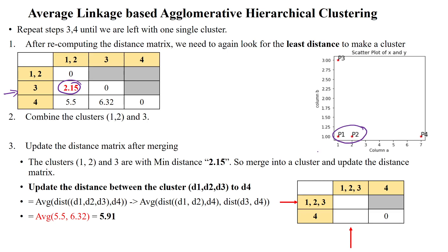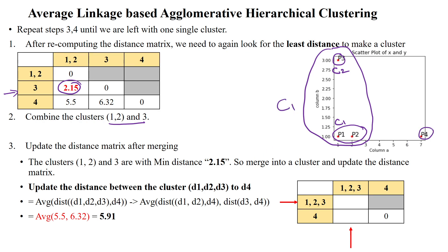Clusters {1,2} and data point 3 are already identified as the closest pair with distance 2.15. We combine these two clusters, merging cluster {1,2} with cluster {3} to form a new combined cluster {1,2,3}. The updated distance matrix row for this merged cluster is then computed.